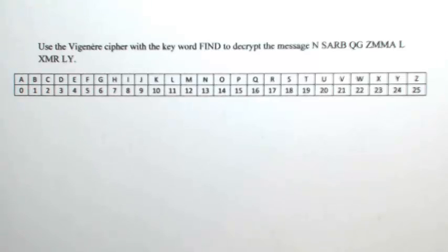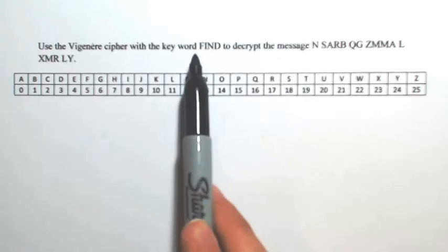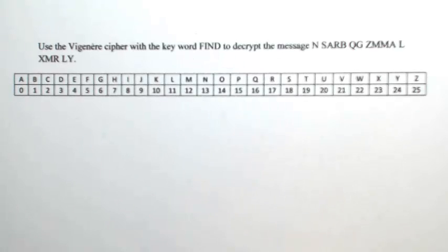Use the Vigenère cipher with the keyword FIND to decrypt the message. So in decrypting the message, we need to go backwards. So this keyword is going to tell us how much to go backwards by.